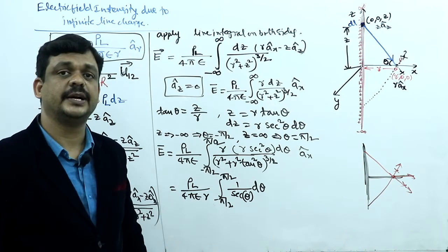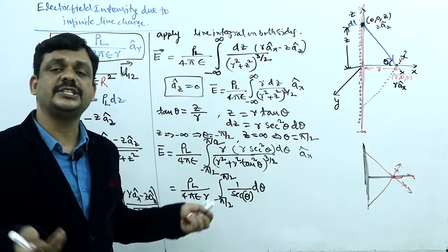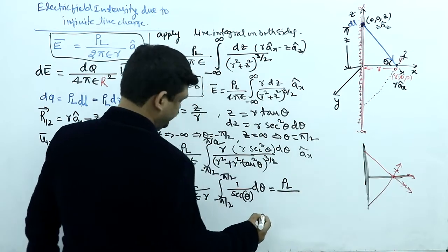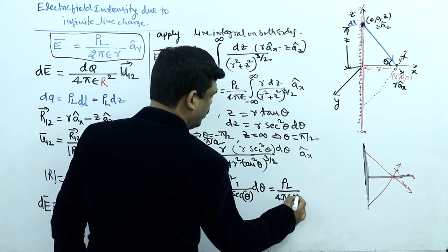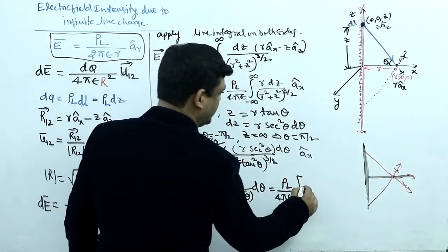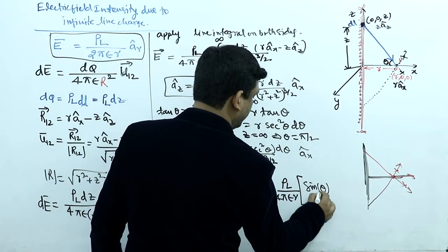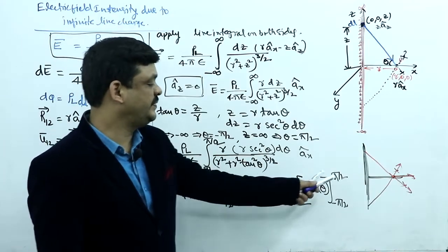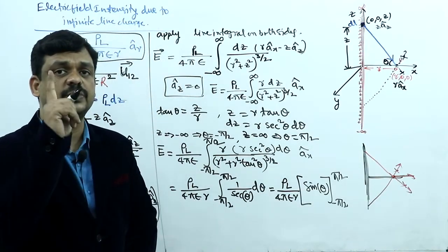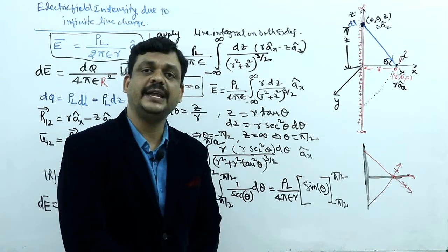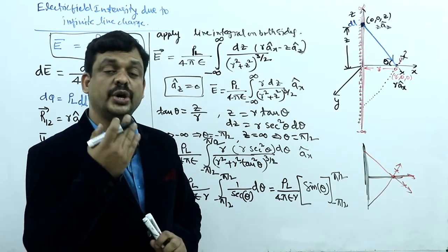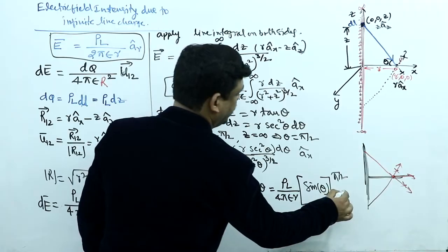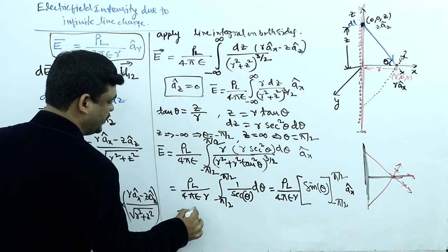The integral of cos θ is sin θ. Applying limits from −π/2 to +π/2: sin(π/2) = 1 and sin(−π/2) = −1, so 1 − (−1) = 2. This gives E = (ρL / 4πε r) · 2 · ax, and the 2 and 4 partially cancel.